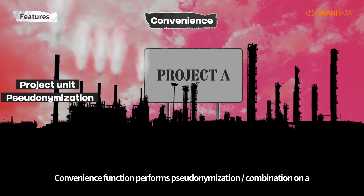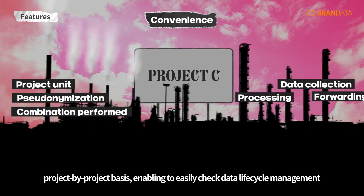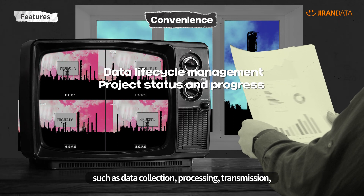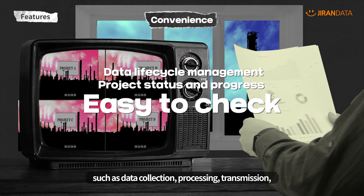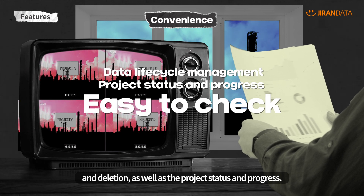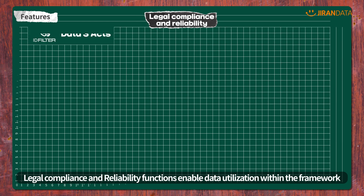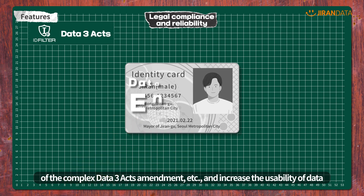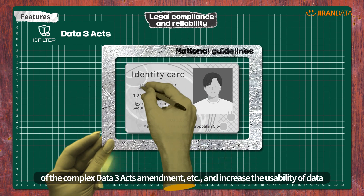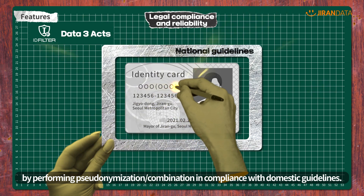Convenience functions perform pseudonymization combination on a project-by-project basis, enabling users to easily check data lifecycle management such as data collection, processing, transmission, and deletion, as well as the project status and progress. Legal compliance and reliability functions enable data utilization within the framework of the complex Data 3 Acts Amendment, and increase the usability of data by performing pseudonymization combination in compliance with domestic guidelines.